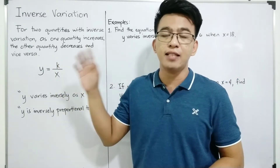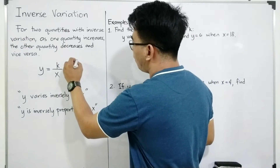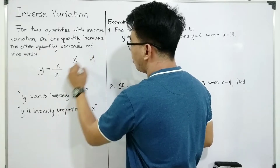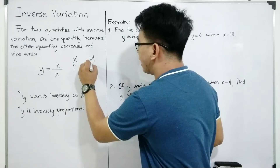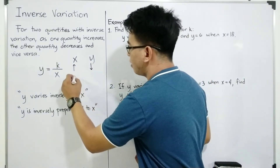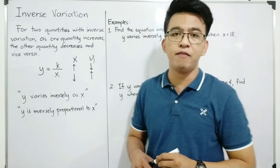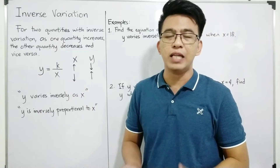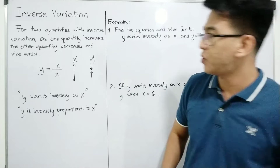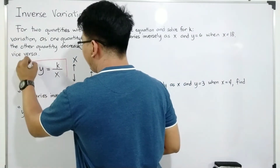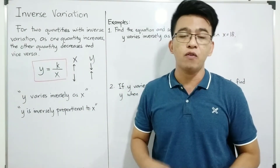But in inverse variation, if one quantity goes up — for example, if your x goes up — what will happen to y? It will go down. But if your x decreases, your variable y will increase. That is the behavior of the quantities or the variables in the inverse variation. And this is the formula that we are going to use. This is the general formula: y is equal to k over x.